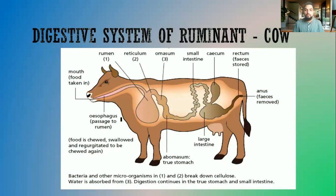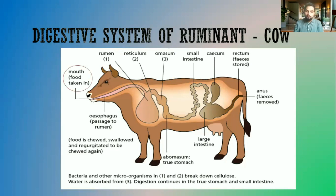Moving on, we're now going to look at the digestive system of a ruminant. We have here the cow — other examples of ruminants would be sheep and goats.